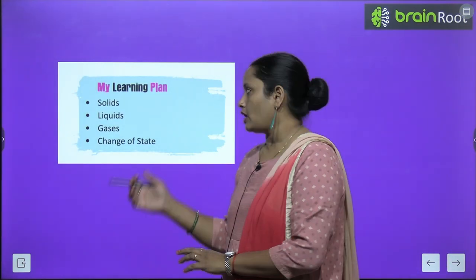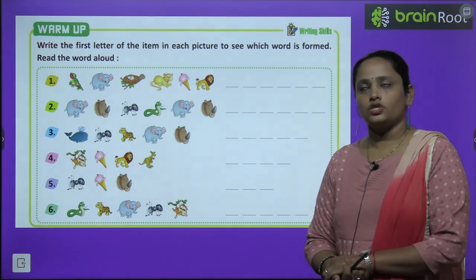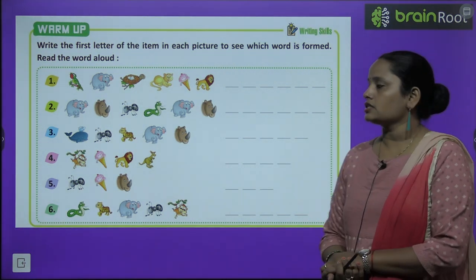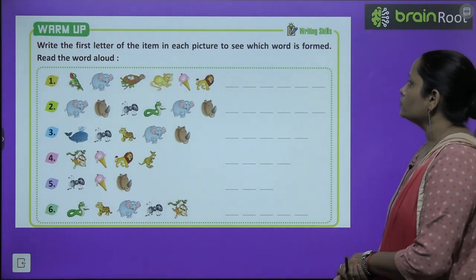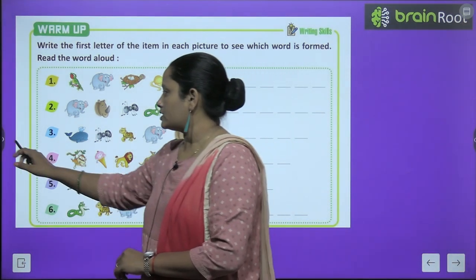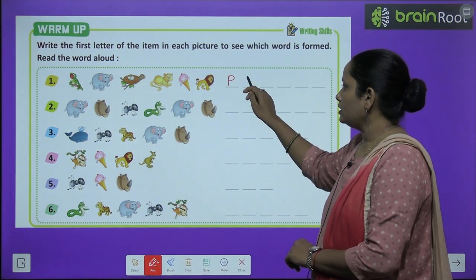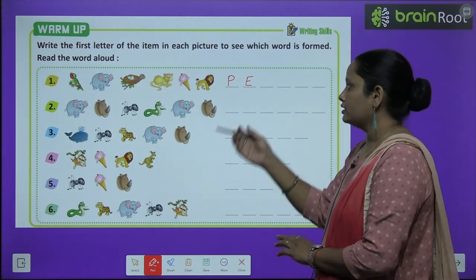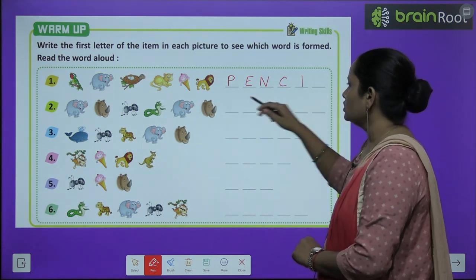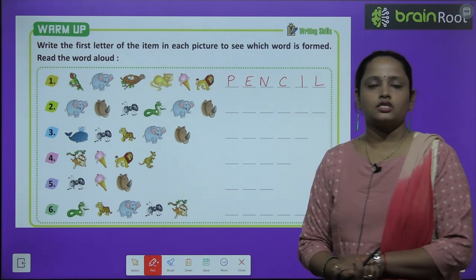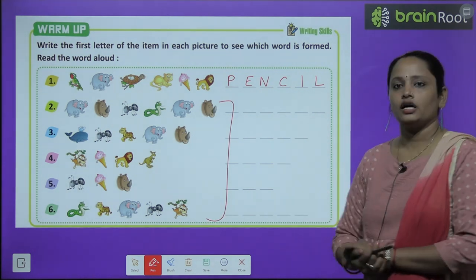So, what all we are going to cover in this chapter — we are going to learn about solids, liquids, gases and change of state. Next, let's move on to the warming up exercise: write the first letter of the item in each picture to show which word is formed. So, the first letter is P for parrot, E for elephant, N for nest, C for cat, I for ice cream, and L for lion. So what is the word? It is pencil. Similarly, children, you have to fill in all the others as we have done the first one.